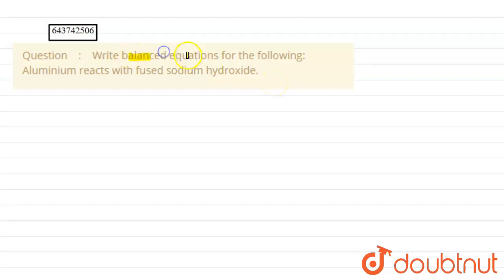We have to write the balanced equation for the following: Aluminum reacts with fused sodium hydroxide.